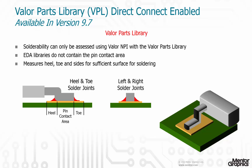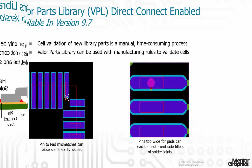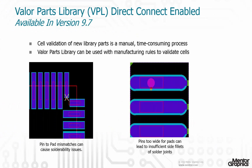Solderability analysis can only be assessed using Valor NPI with the Valor Parts Library. EDA libraries do not contain the pin contact area, so without VPL you have no means of measuring heel, toe, and sides to verify sufficient surface for soldering. But with VPL and Valor NPI, you can do exactly that — identifying issues that cannot be found using CAD libraries.